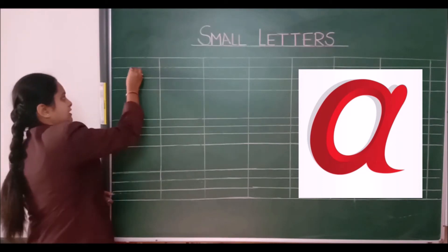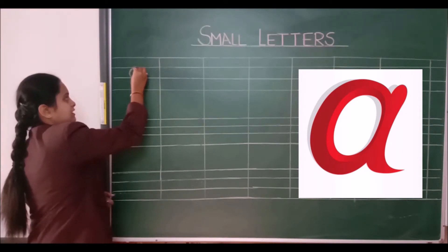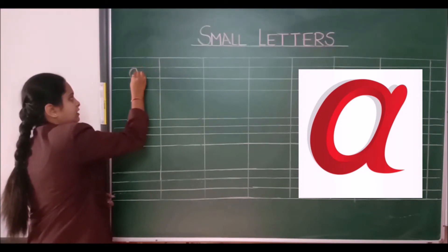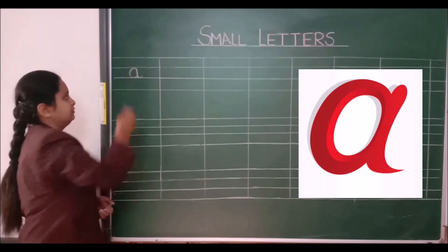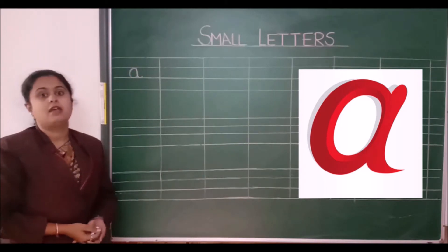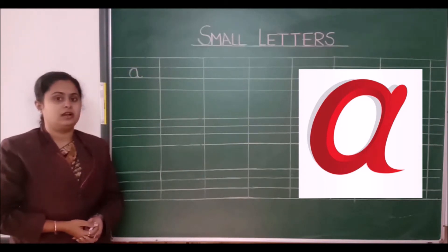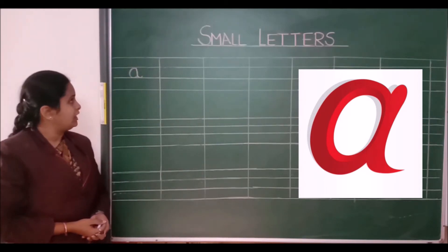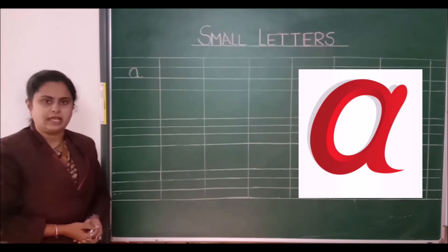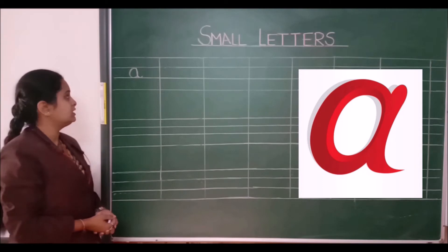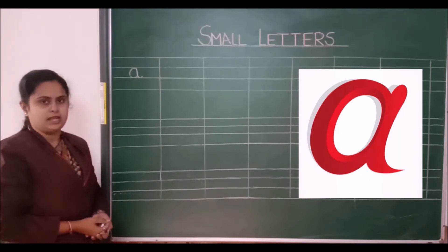You have to make a circle like this and a small curve like this. This is called small letter A.